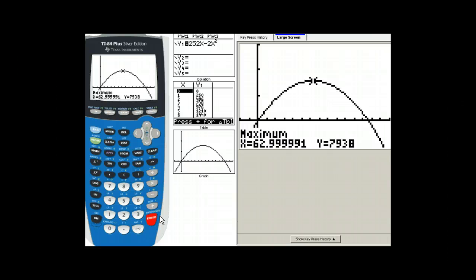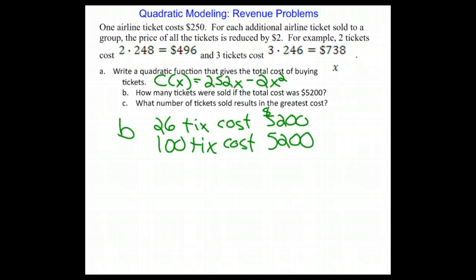That .999991 is close enough to a whole number. So 63 tickets will give a cost of $7,938. So for part C, we found that 63 tickets maximize the cost.